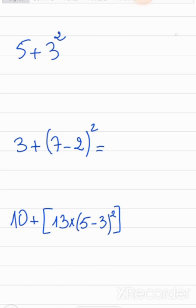In the following example, we have addition and exponents. The exponent is like a multiplication — it is stronger than addition. So we calculate the exponent first. It's 5 plus 3 squared, which is 9, and then 5 plus 9 is 14.